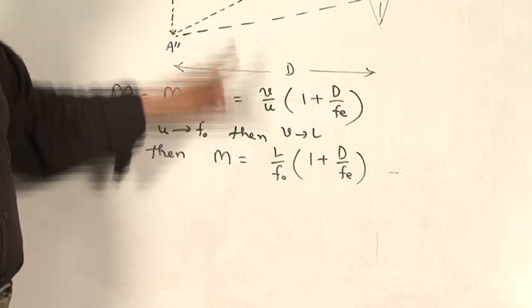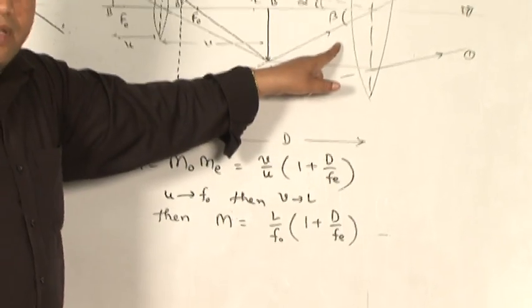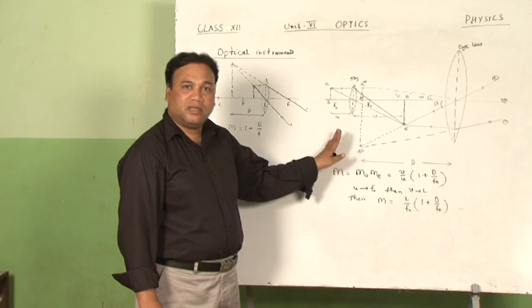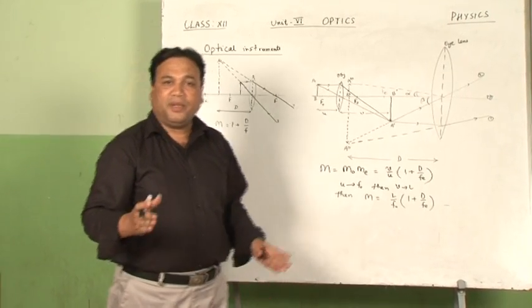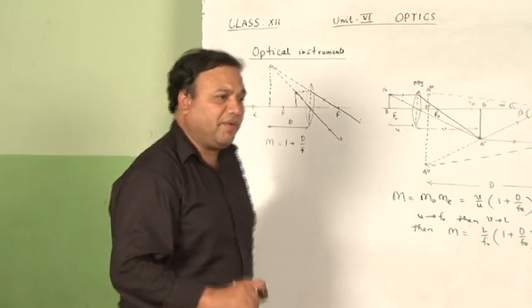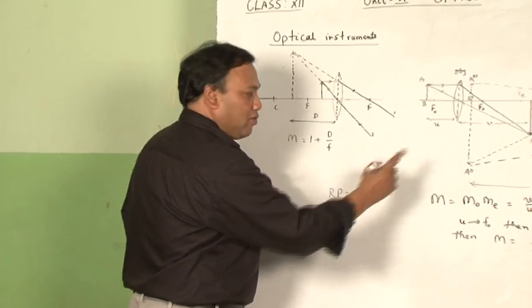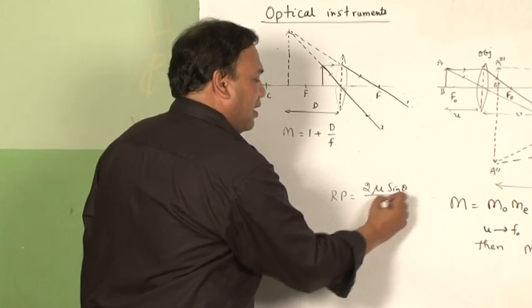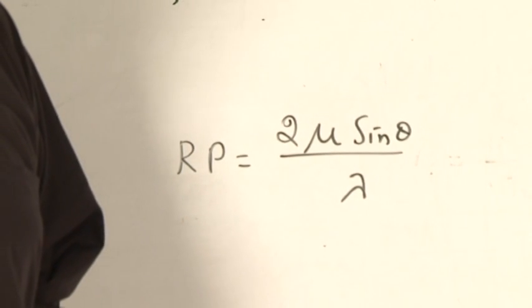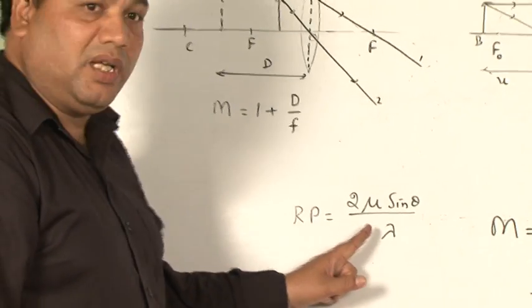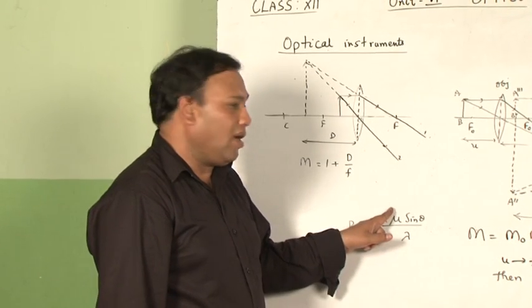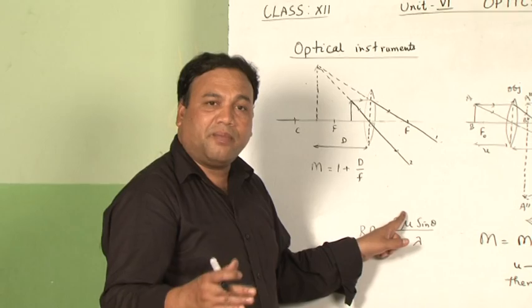This equation explains why we should select an objective of shorter focal length and an eyepiece of larger focal length. The resolving power of an optical instrument like a microscope and telescope is defined as the ability of the instrument to show two objects which are very nearby as distinctly separate. The resolving power is written as RP = 2μsinθ/λ, where λ is the wavelength of light used and μ is the refractive index of the medium between the objective lens and the object. To increase the resolving power, we have to decrease the wavelength of light used and replace the medium with one whose refractive index is higher.